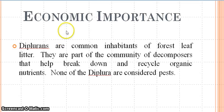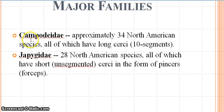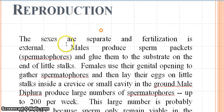For economic importance, Diplura are common inhabitants of forest leaf litter and are involved in the decomposition of dead organic matter. None of the Diplura are considered as pests — in fact, they are human friends. A major family of Diplura is Campodeidae, with approximately 34 North American species, all of which have short, unsegmented cerci in the form of pincers or forceps.